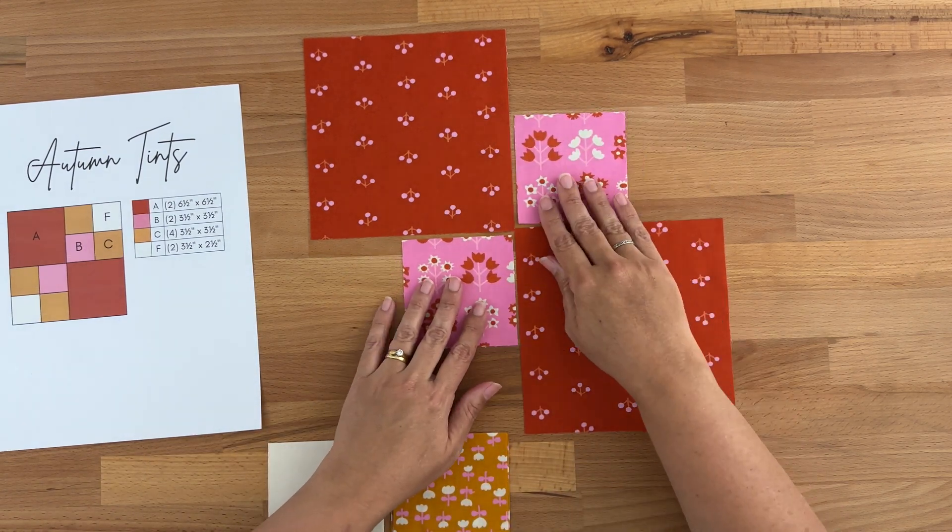And sew just like we have. For both pieces just setting the stitches, then opening it up and we're going to press the seams towards our larger piece or our A fabric. Finger pressing so we don't have any creases in there and then pressing.